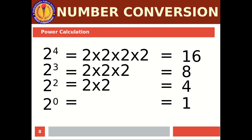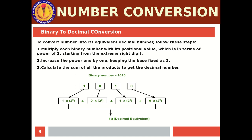Keep in mind: if any number's power is zero, the answer will be 1 — don't confuse it with zero. To convert a binary number to its decimal equivalent, multiply each binary digit by its positional value in terms of powers of 2, starting from the extreme right digit. Increase the power one by one from right to left, keeping the base as 2. Then calculate the sum of all the products to get the decimal number.